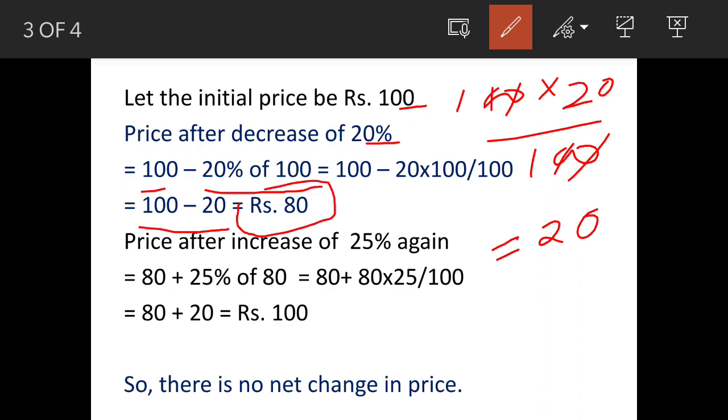Now price is increased again by 25%. So the decreased price is 80, and we add 25% of 80. Same way we will work out the percentage: 80 into 25 divided by 100. So this will be 80 plus 20. 25% of 80 is 20, so the result is Rs. 100.